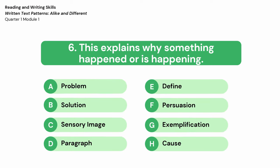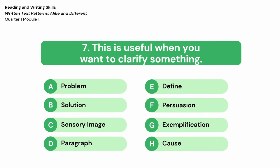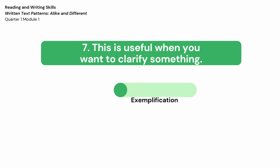Number 6: This explains why something happened or is happening. The correct answer is letter H, Cause. Number 7: This is useful when you want to clarify something. The correct answer is letter G, Exemplification.